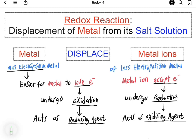Good day everyone. Today we will discuss another example of redox reaction: displacement of metal from its salt solution. In a displacement reaction of metal, a more electropositive metal located higher in the electrochemical series will displace a less electropositive metal located lower in the electrochemical series. The metal ions of the less electropositive metal will be displaced from its salt solution.